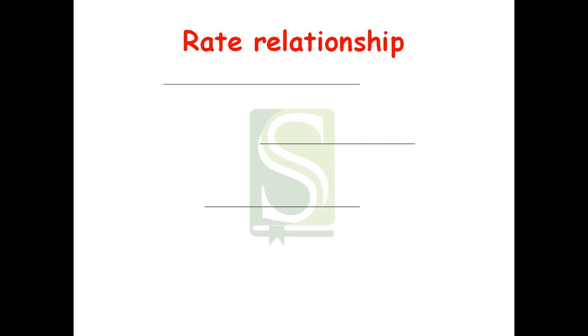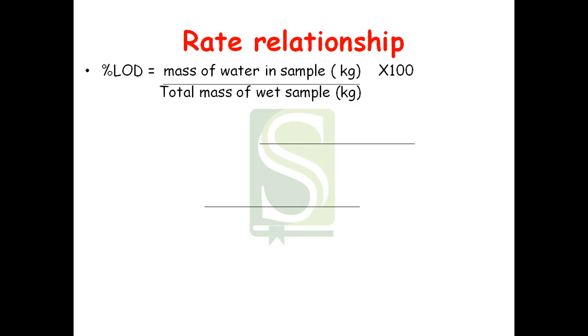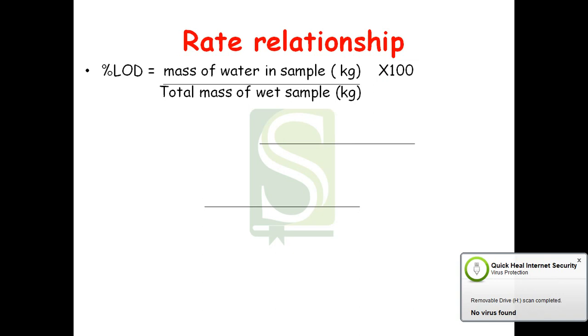Periodically the slab is weighed, and the difference in the weights of two successive periods gives the loss of moisture content — that is, the amount dried. The moisture present in the solid can be expressed on a wet weight or dry weight basis. The first calculation is percent LOD (Loss on Drying): it is the ratio of mass of water in the sample to the total mass of the wet sample. To find the mass of water, subtract the weight of the dry sample at the end of the experiment from the initial wet weight.